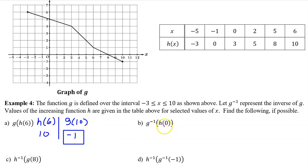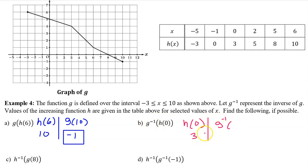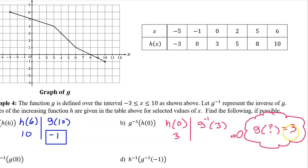Part B: working from the inside out, we begin with h at 0. h at 0 is 3. Next, we move on to evaluating g inverse at 3. But we don't have g inverse. So we think indirectly and ask ourselves: g at what is equal to 3? Here's the output value of 3, and we see that g at 4 is equal to 3. So 4 is the answer.